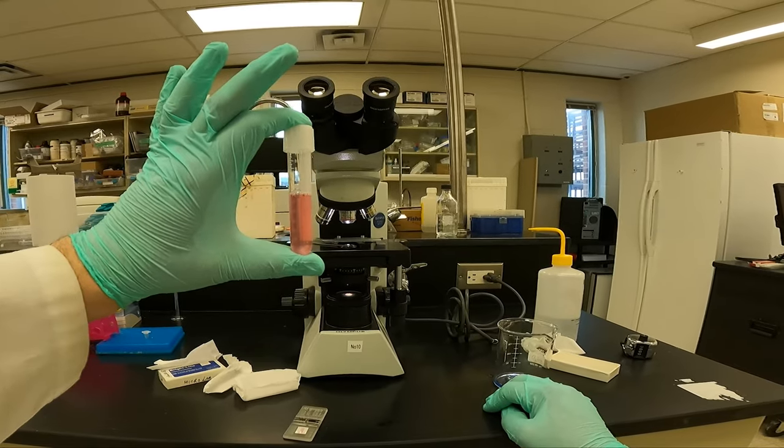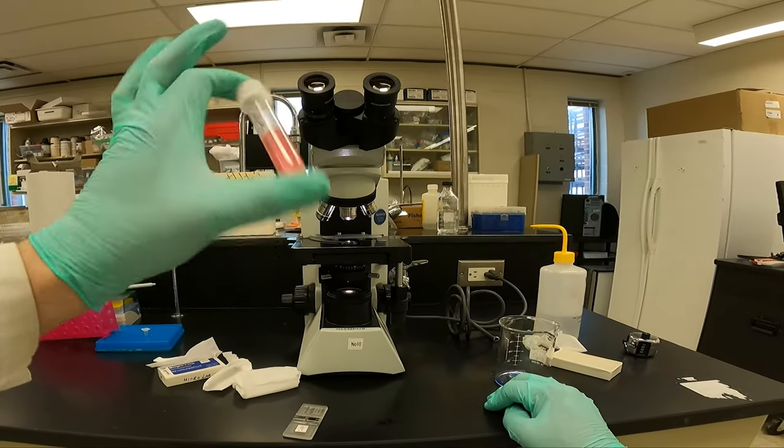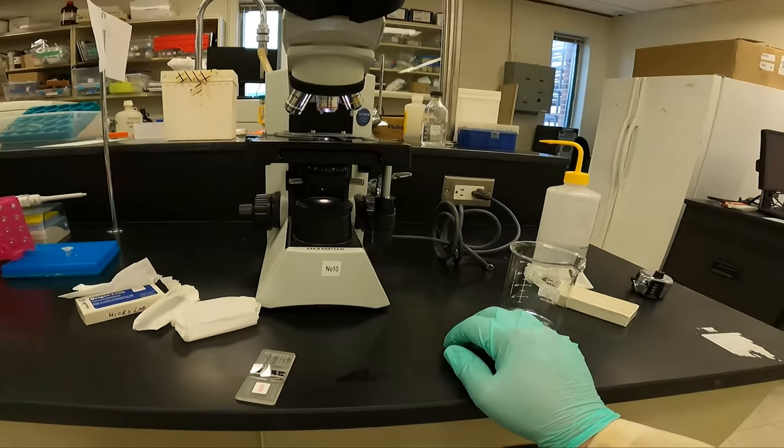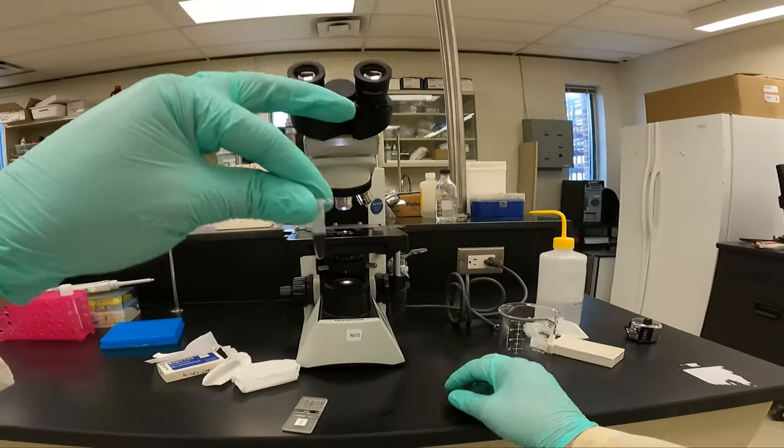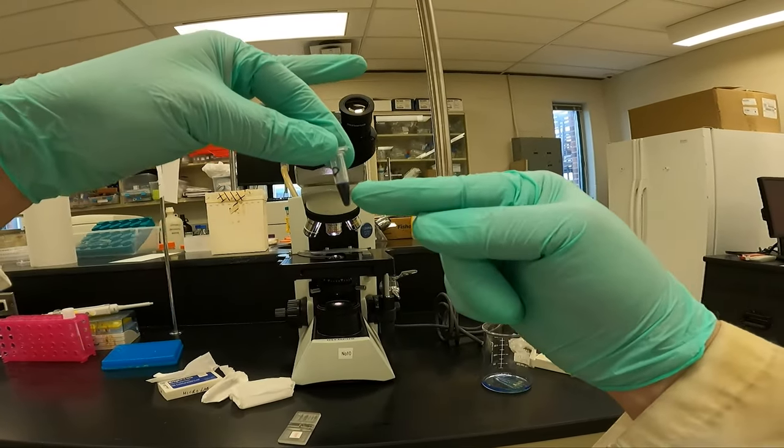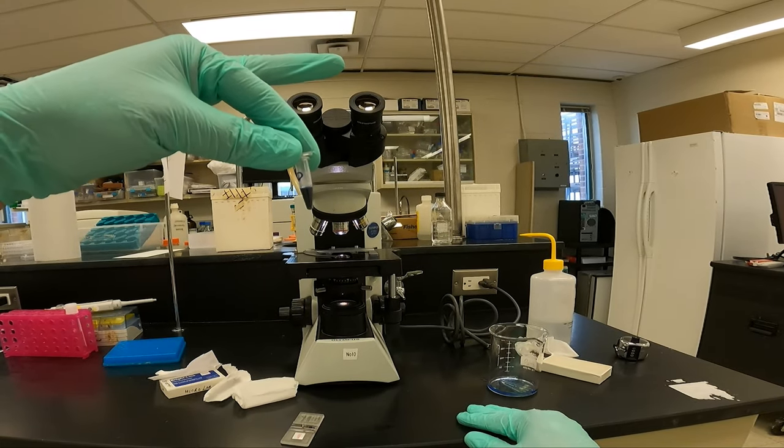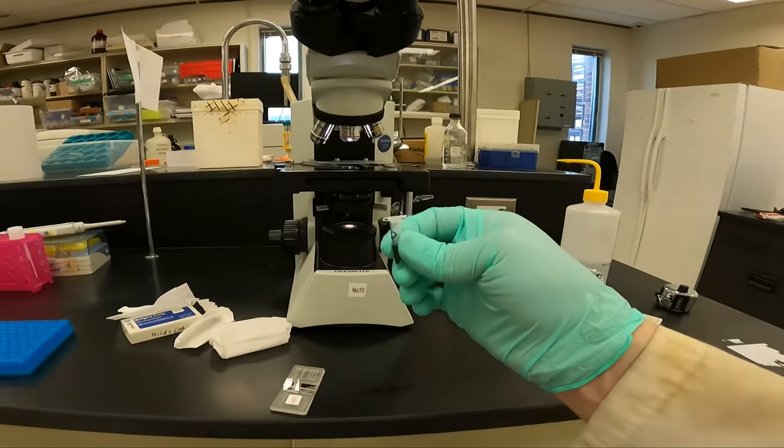Remember, they sink to the bottom, so make sure you invert it before you sample it. And you'll dilute this in trypan blue. I've done this already. I've taken 100 microliters of cells and 100 microliters trypan blue. A one-to-one dilution.